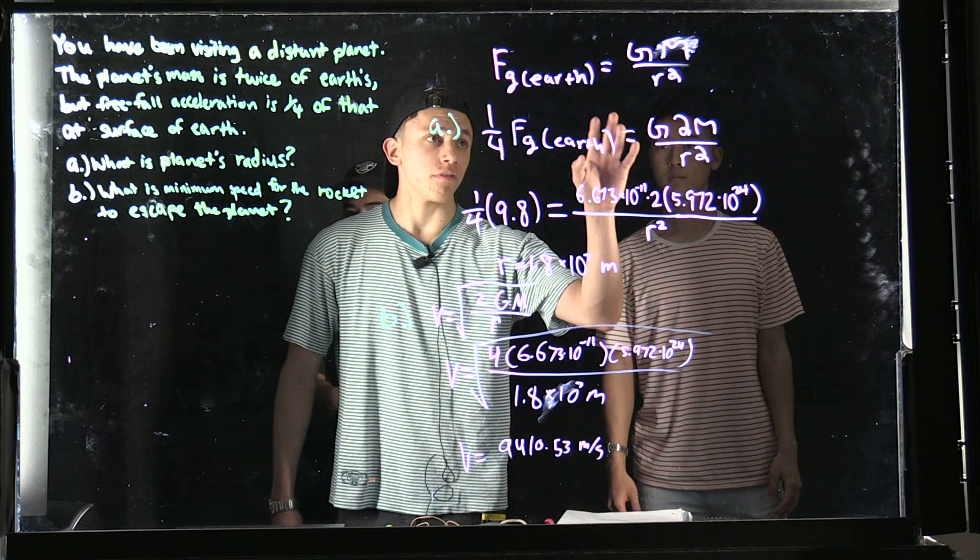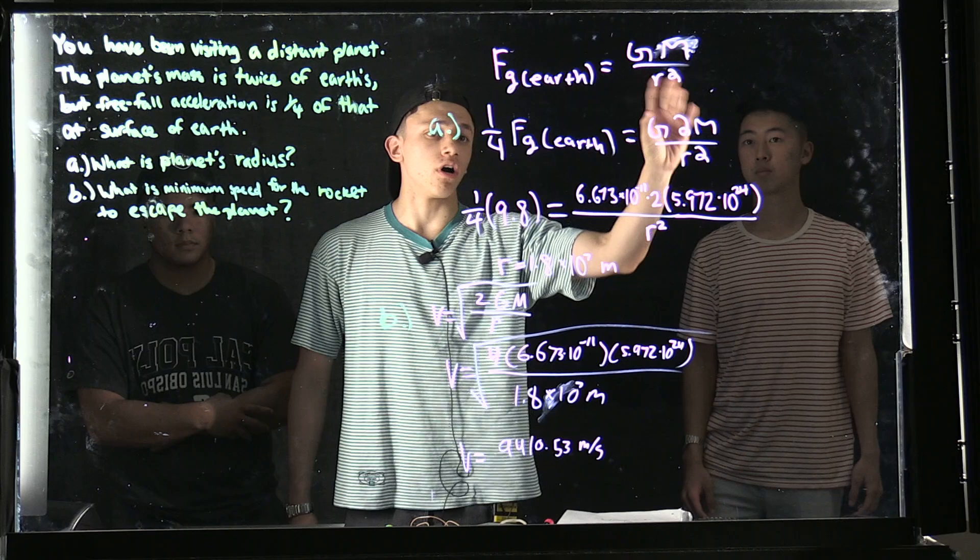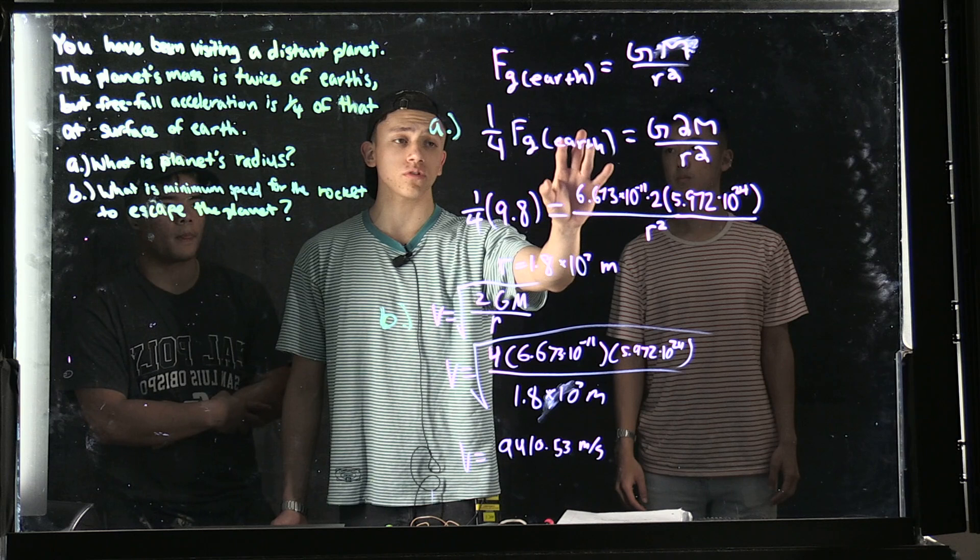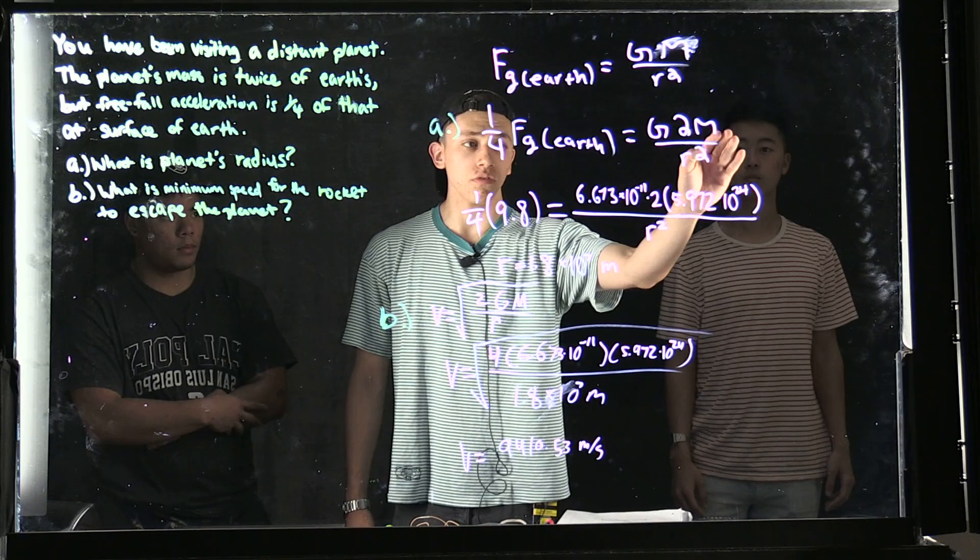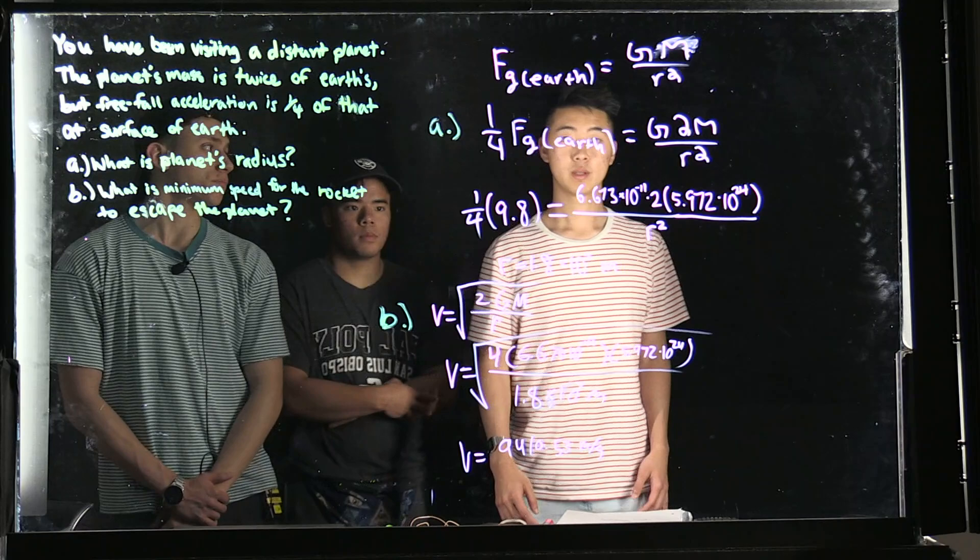What we know is Newton's universal law of gravitation, which is Fg(Earth) = GM/r². In the problem, they're asking for one-fourth of the force of gravity on Earth. So we multiply one-fourth with the force of gravity, which equals big G, and M is multiplied by 2, over the radius squared. I'll hand it off to Sam who will explain the next part.